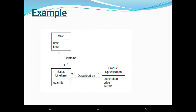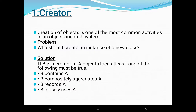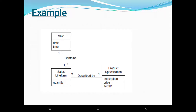For example, in the POS application, who should be responsible for creating a sale line item instance? Consider a partial domain model of sale line item. Here, Sale takes the responsibility of creating sale line item instances, since Sale contains many sale line item objects. The relationship between Sale and sale line item is 'contains', so Sale is responsible for the creation of sale line item instances.